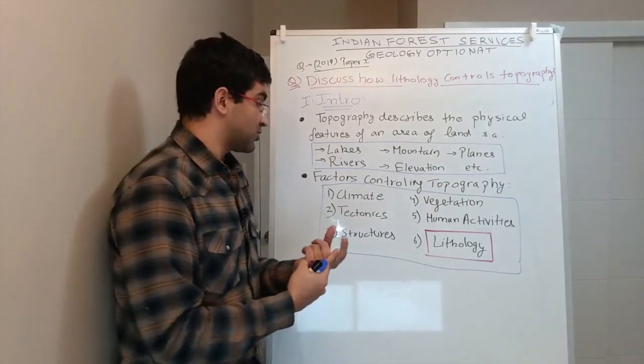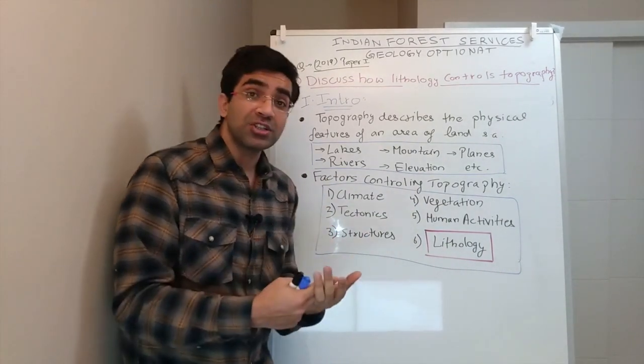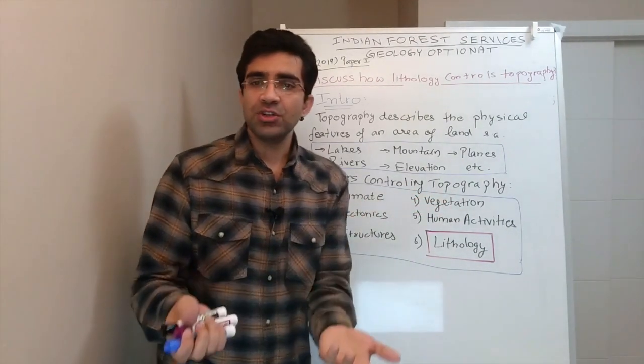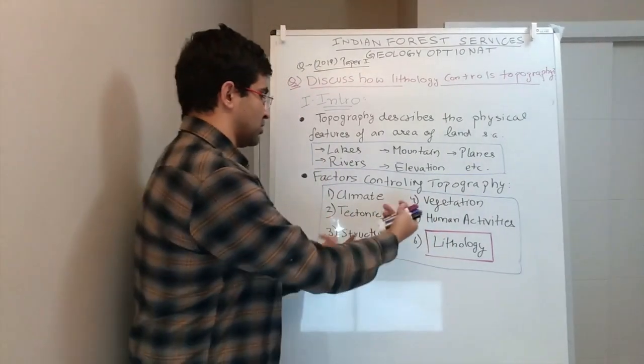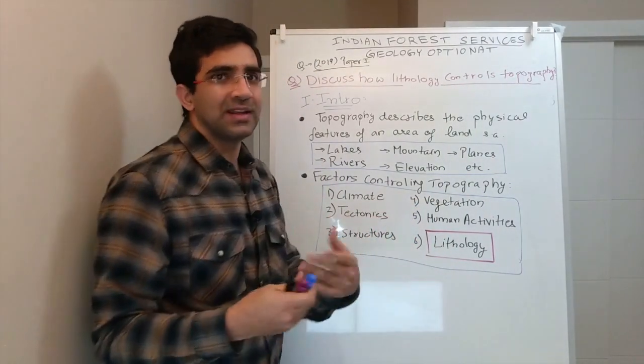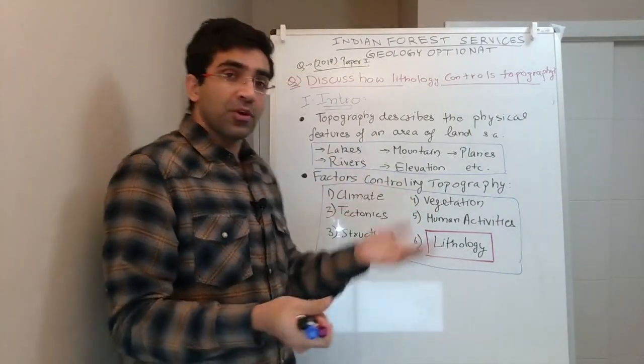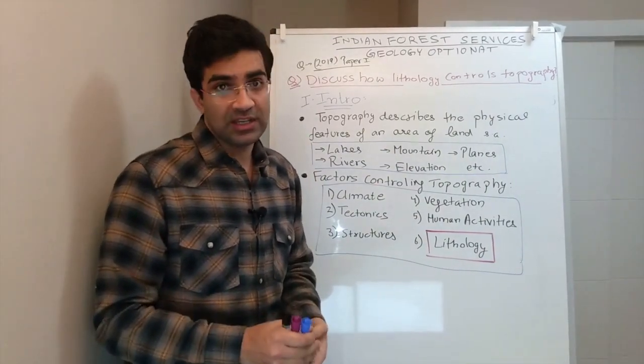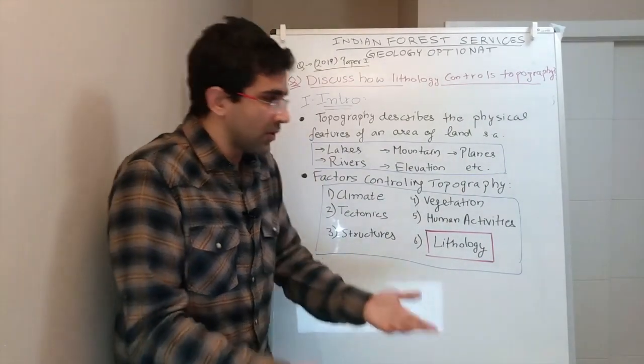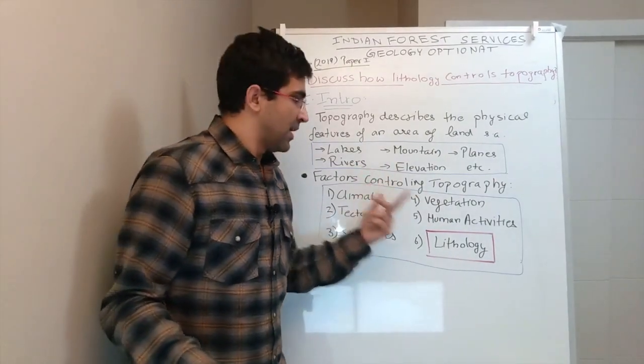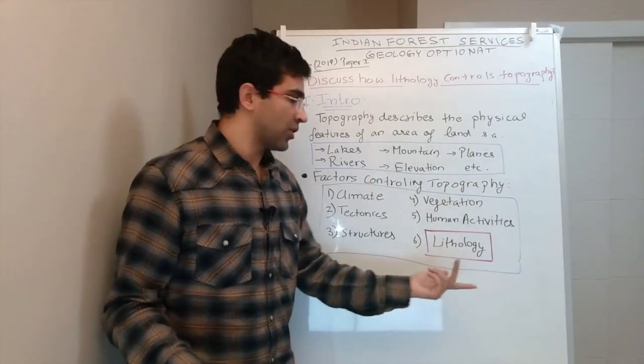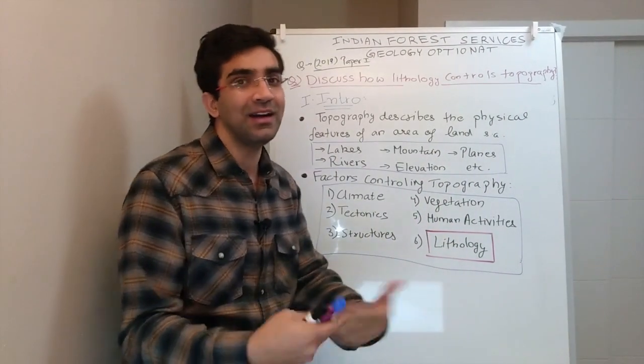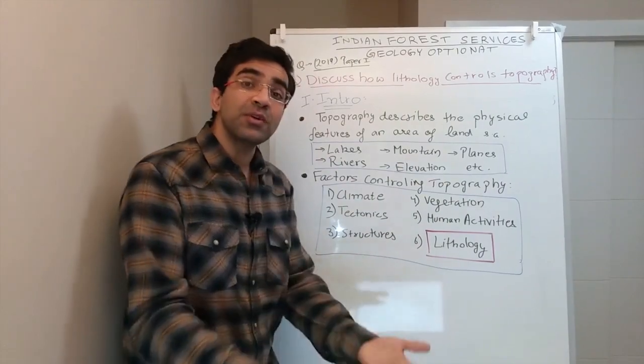So, the first is climate. Climate affects topography. Tectonics does affect topography. Structures for example presence of folds or faults that is what affects topography. Vegetation of an area. This vegetation is linked to climate also but in itself vegetation also affects topography of an area. Then human activities also affect topography. This is especially important for the present day. It may not have been important in the past. And finally lithology affects topography and this is what we have to enumerate on or this is what we have to expand in our subsequent sections in this answer.